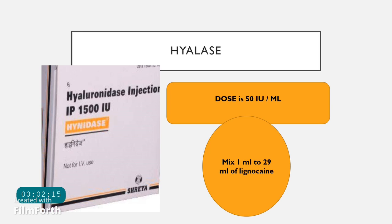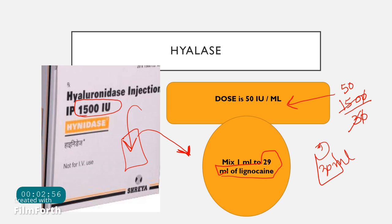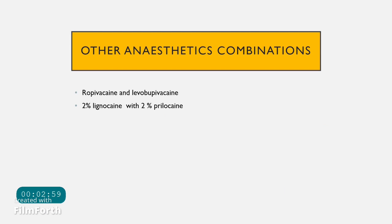To reconstitute hyaluronidase: the target dose is 50 international units per ml. The available vial contains 1500 international units as a powder. Take 1 ml from the 30 ml lignocaine vial, dissolve the powder in it, then add the reconstituted hyaluronidase back into the remaining 30 ml lignocaine. This gives a final concentration of 1500 units in 30 ml, equaling 50 international units per ml.